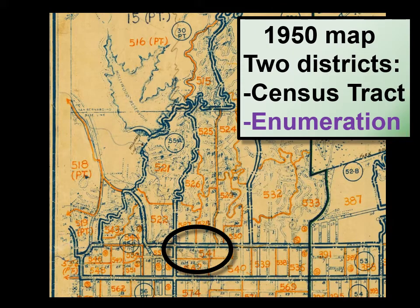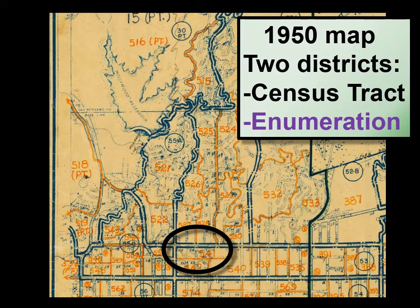Here is the same area as of 1950. Now we have only two districts — the enumeration districts are in orange, and in circles are the various census tracts. But I still had to figure out the streets within each of these EDs using a circa 1950 map, and many of those are illegible. So even though the 1950 map looks better, there are still problems.